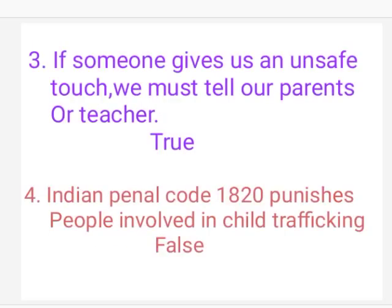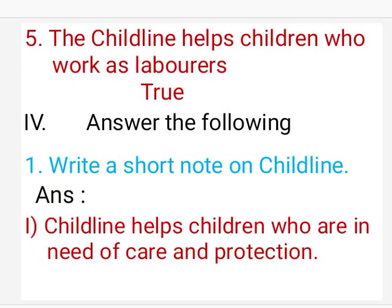Third one: If someone gives us an unsafe touch, we must tell our parents or teachers. Answer: True. Fourth one: Indian Penal Code 1820 punishes people involved in child trafficking. Answer: False. Fifth one: Child line helps children who work as laborers. Answer: True.